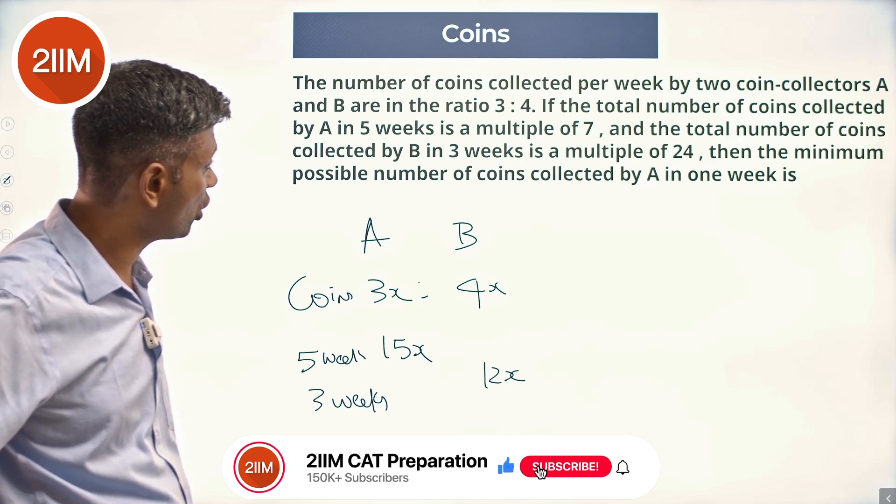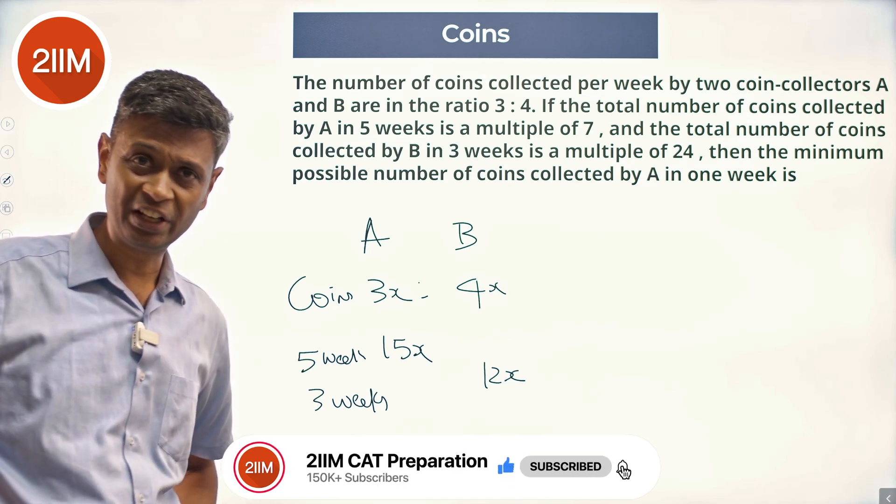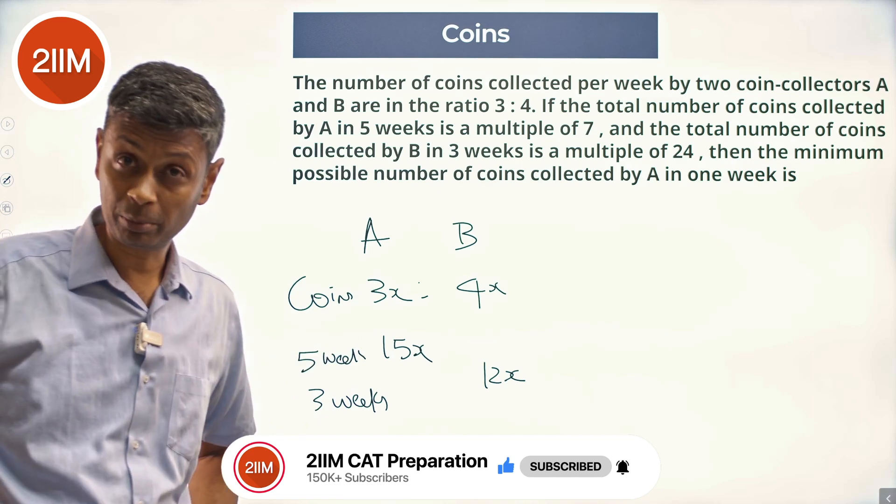Find the minimum possible number of coins collected by A in 1 week. So 15x is a multiple of 7, so x has to be a multiple of 7.